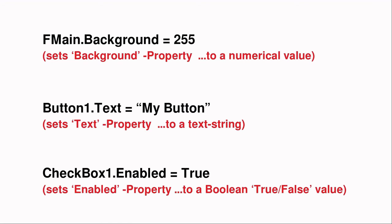Also, during design time, when setting the properties within the IDE, Gambas will only present those options that are valid. In fact, a quick way to determine valid property values is often to look at the individual property choices available at design time, or to consult the Gambas help system.